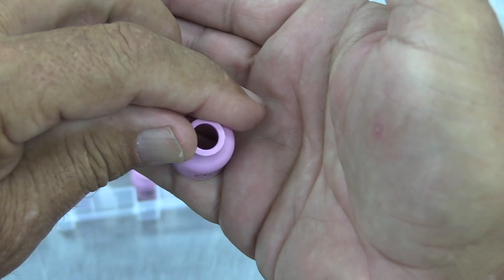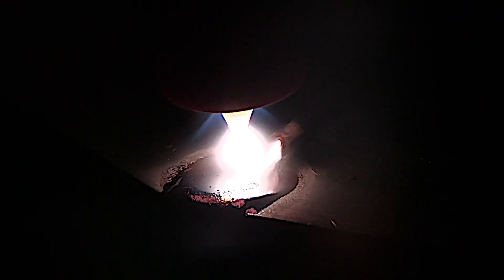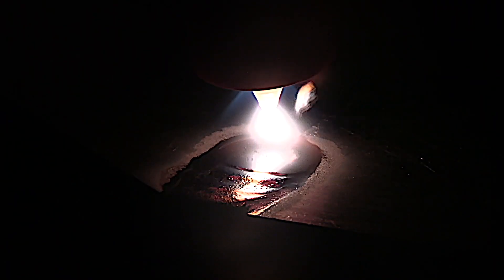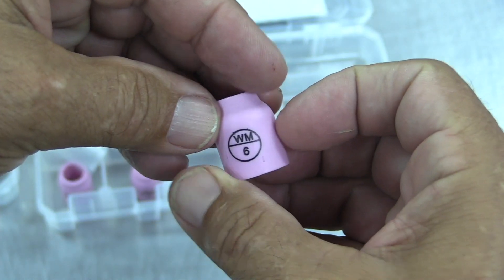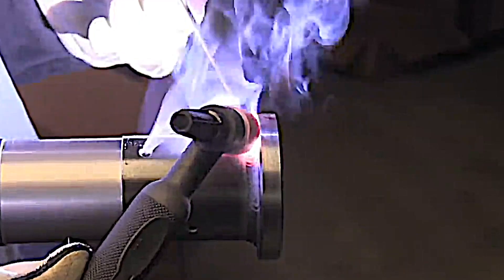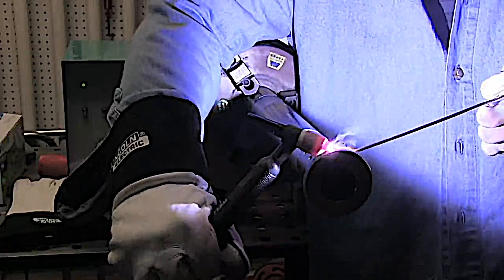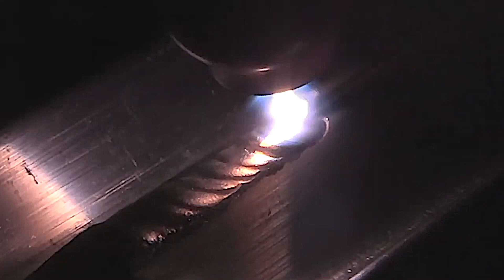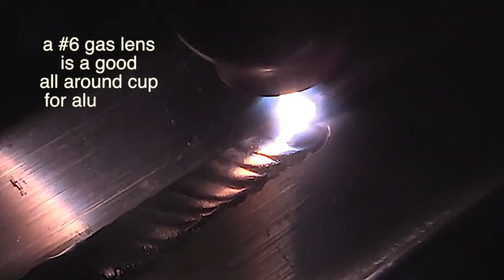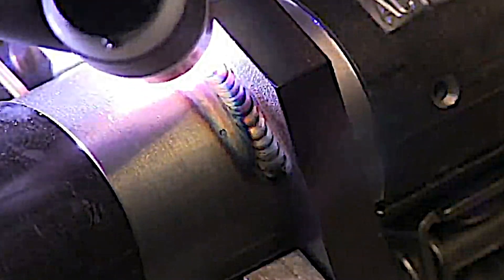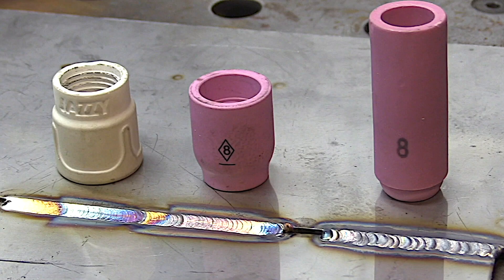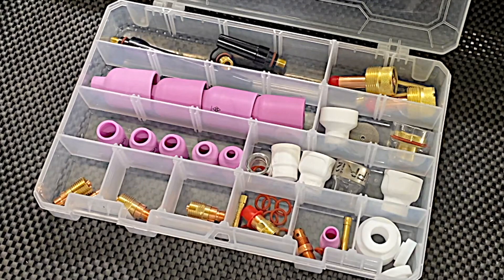A number five cup for full penetration aluminum welds. A number six is great for fillet welds on carbon steel, especially for walking the cup like this. I personally like to use a number six as an all-around cup for aluminum. The number seven cup is a great all-around cup for steel, lets you use a little bit longer stick out.